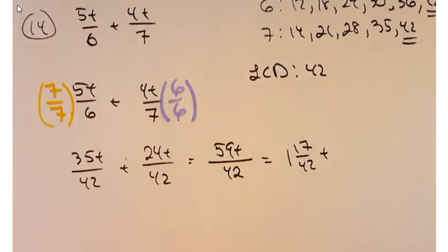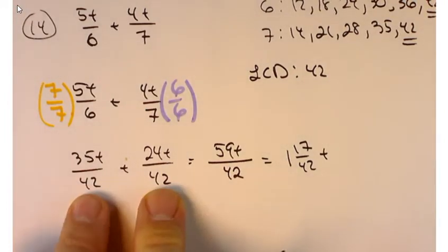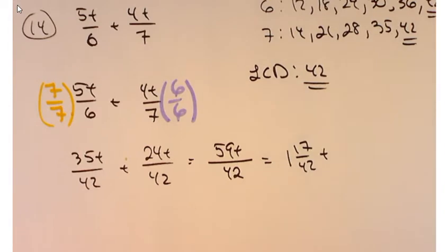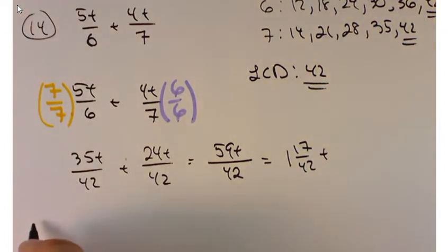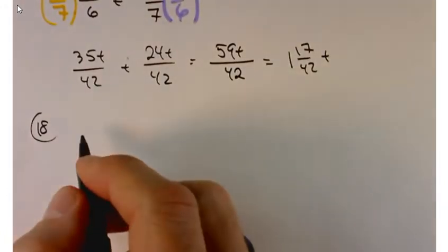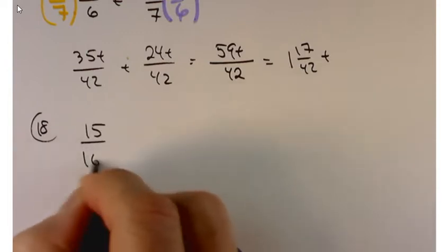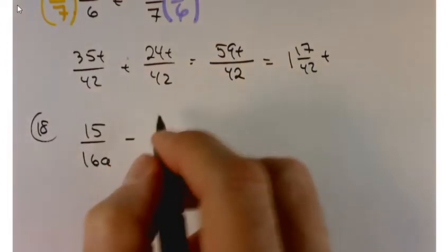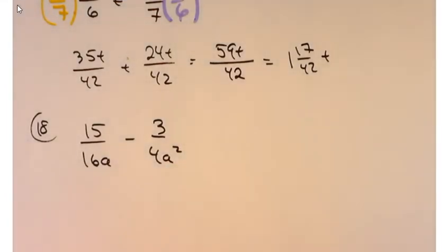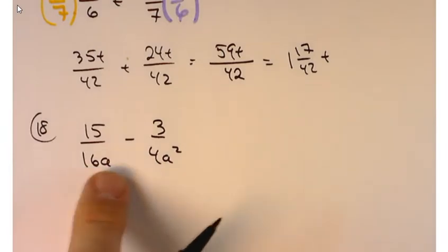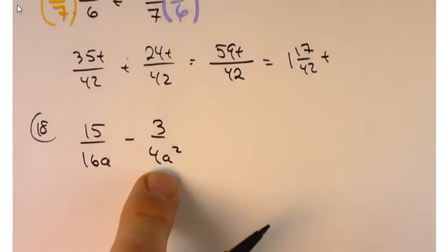Let's try problem number 18. Sometimes you'll be able to spot the LCD right away, and that's fine — you won't get extra points for showing all the work, though it does help give partial credit if you get something wrong. Problem 18 is 15 over 16a minus 3 over 4a squared. Our LCD will have to combine elements for the numbers as well as the variables.